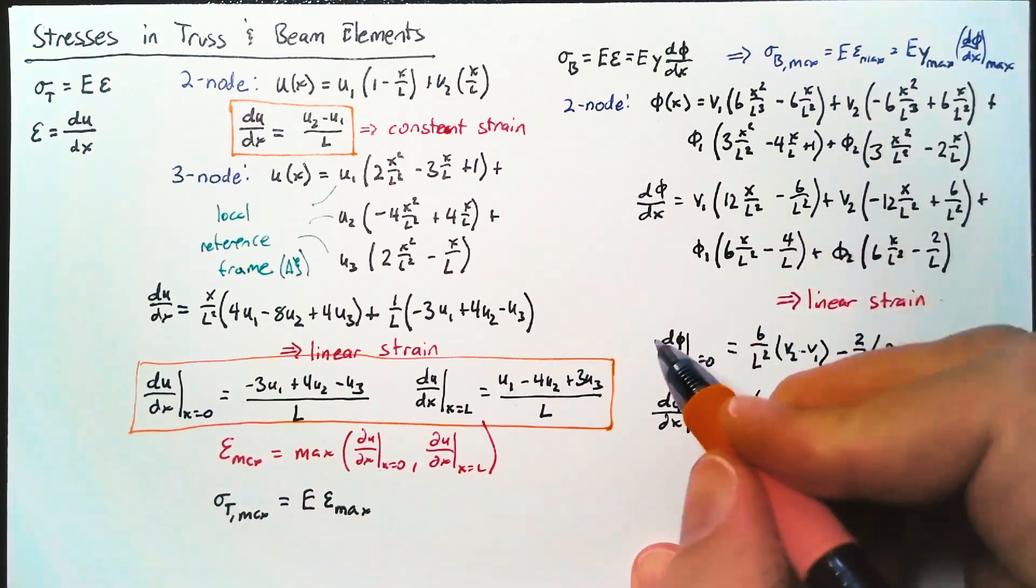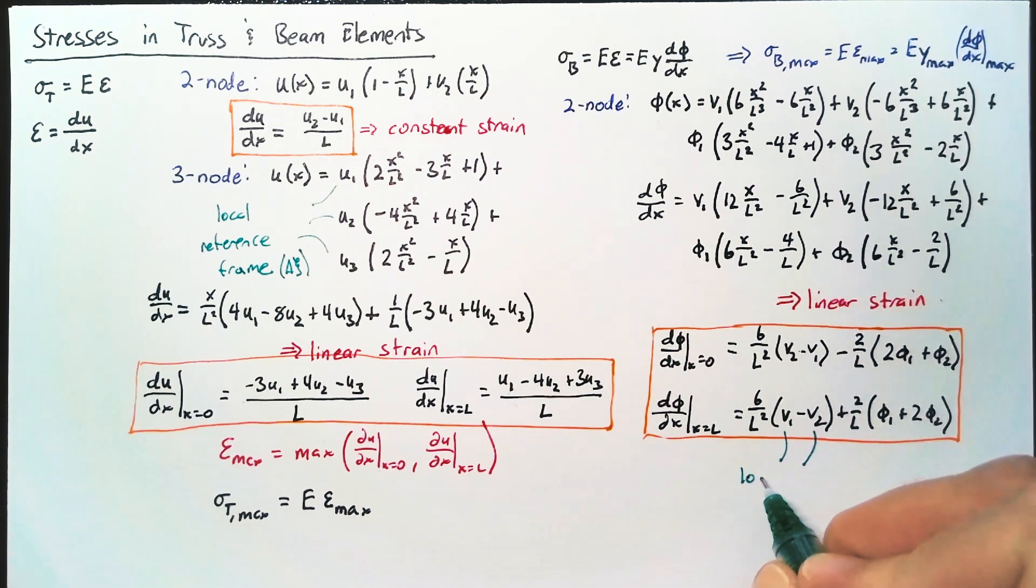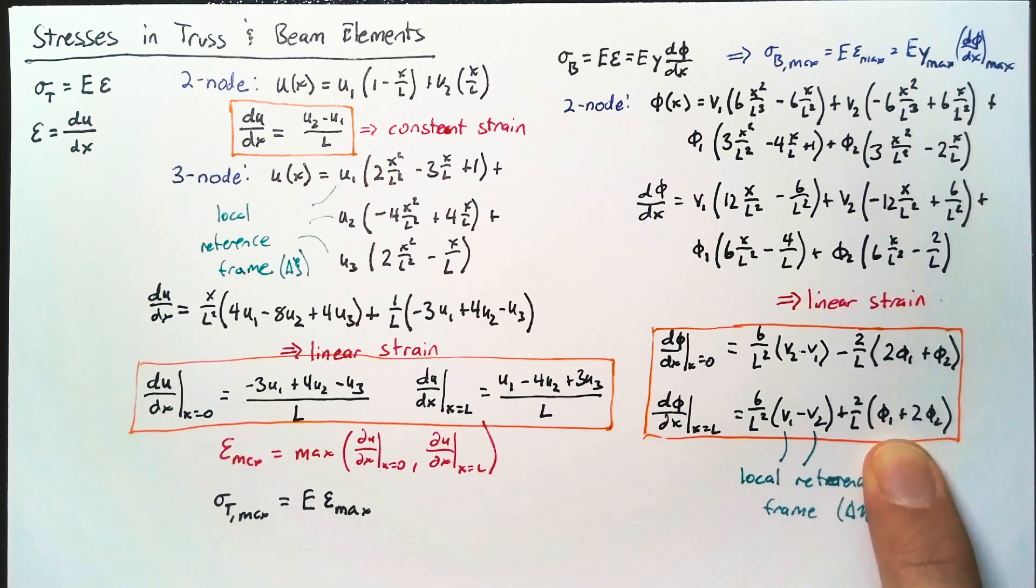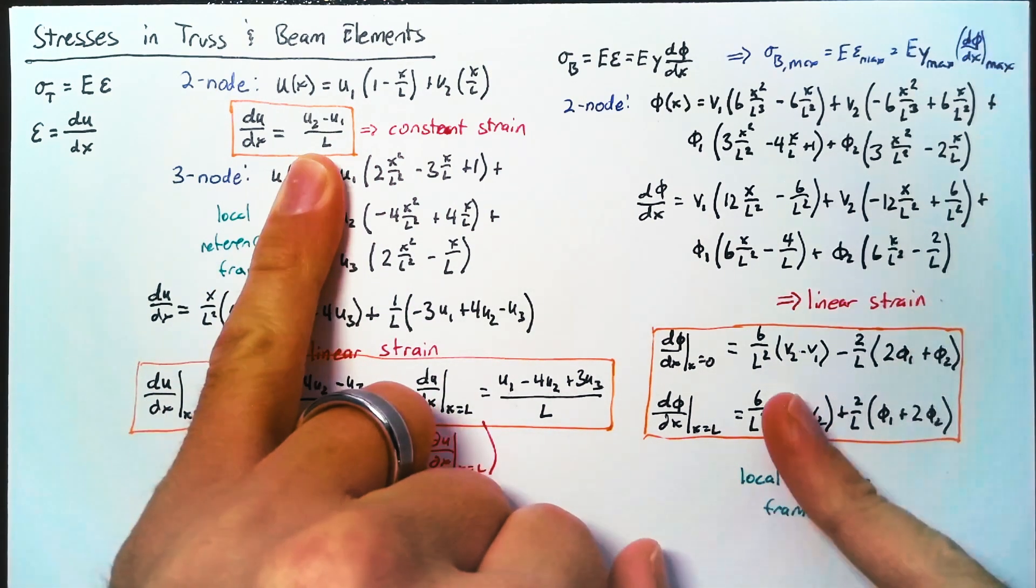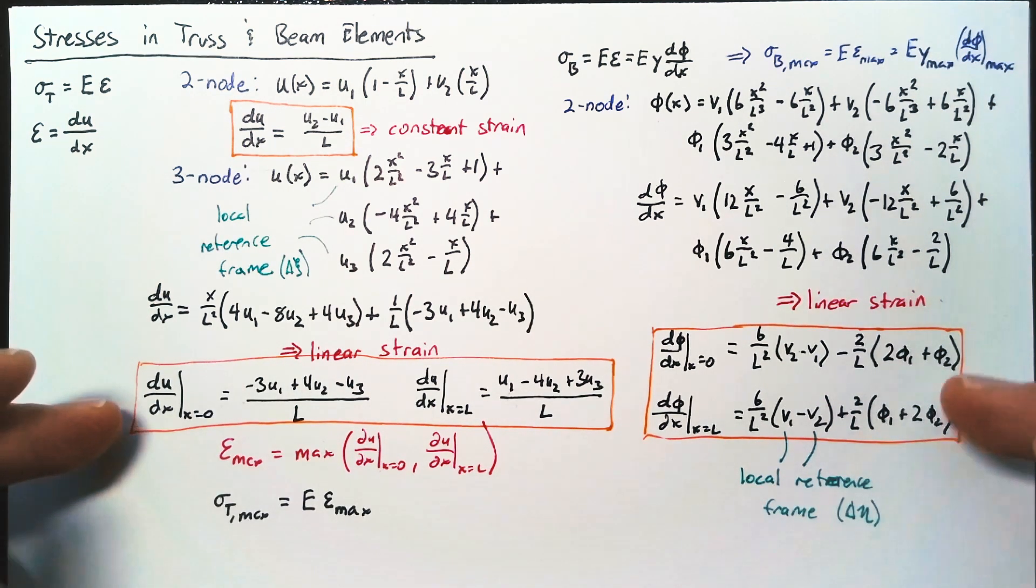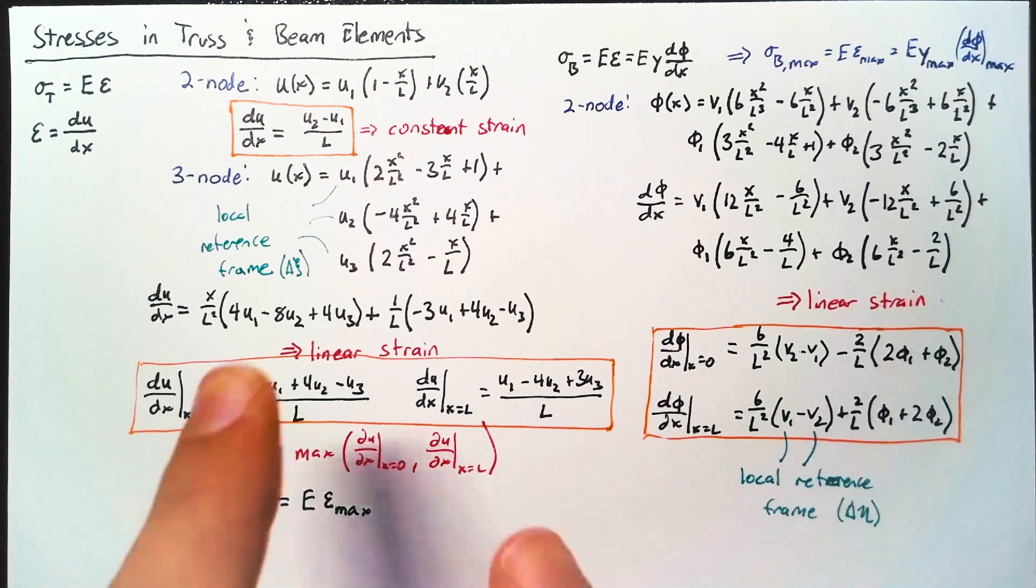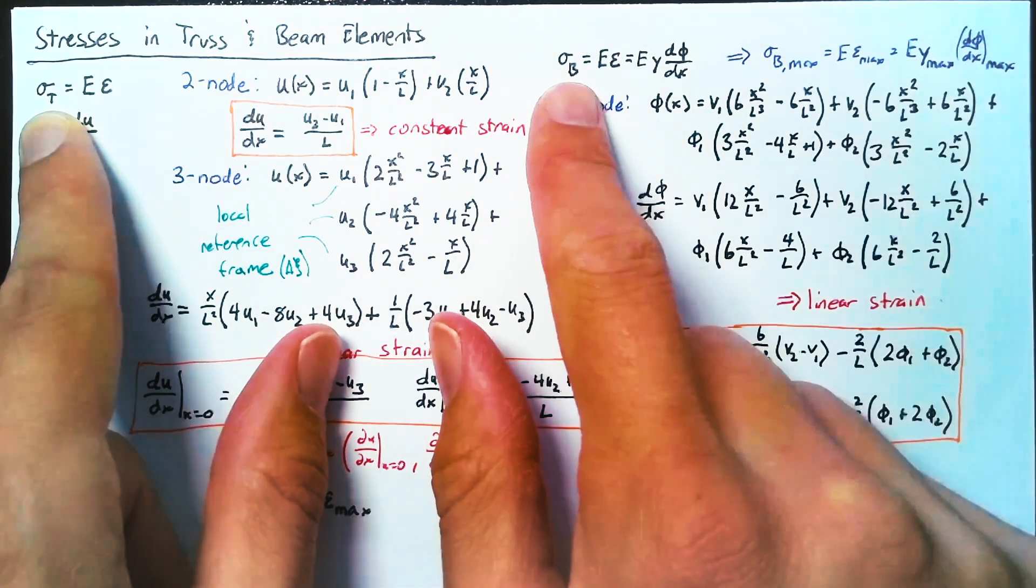For the beam element, once again, we need to look at the local reference frame. So we need to convert our V1 and V2 to delta atas. Fortunately, rotation does not cause our phi's to change, and so we can just leave those as is. So the process here is we find our u's or our v's in the local reference frame. We calculate the maximum value if necessary, or if we just have this two node element, we can just use that constant value.